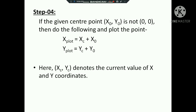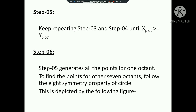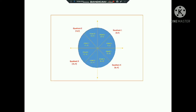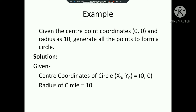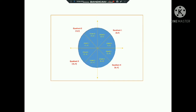Here x and y denote the current values of the x and y coordinates. Keep repeating steps 3 and 4 until x is greater than or equal to y. Once done, use the symmetry property to fill in the remaining points of the full circle using all 8 octants.